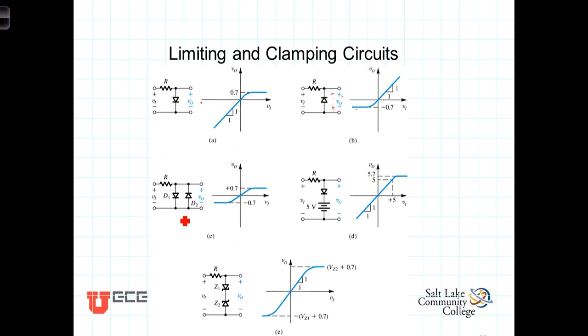This circuit has a combination of those two. Under positive voltage, this diode will limit this output voltage to 7 tenths of a volt, and under a negative voltage, this diode limits the output to negative 7 tenths of a volt. And so the output will swing between plus or minus 7 tenths of a volt.